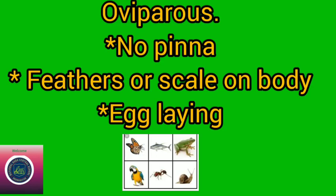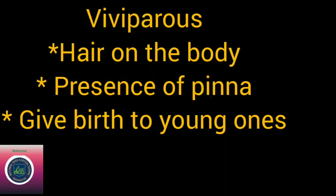So, oviparous animals have no pinna and they are egg-laying. What do viviparous animals have? They have hair on their body and they have pinna.